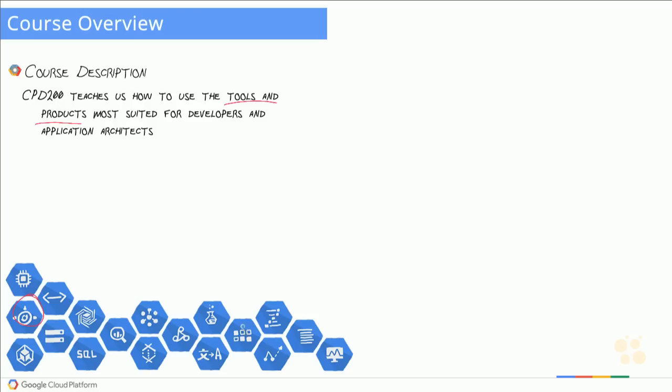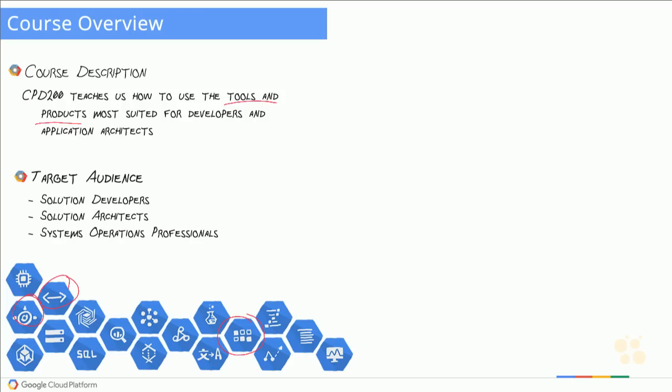That means things like Google App Engine, Datastore, and Cloud Endpoints. Each 200 level course picks and chooses the products that make the most sense for the role being discussed. Our target audience is therefore a little bit narrow — specifically we want solution developers, though solution architects and operations professionals will also have a lot to get out of this.